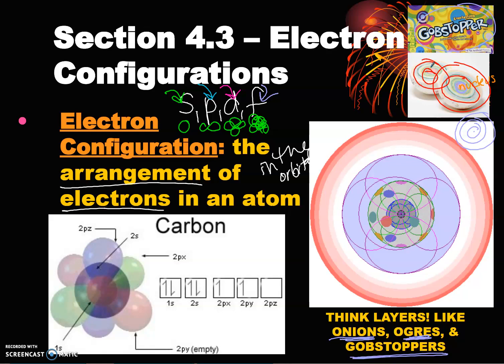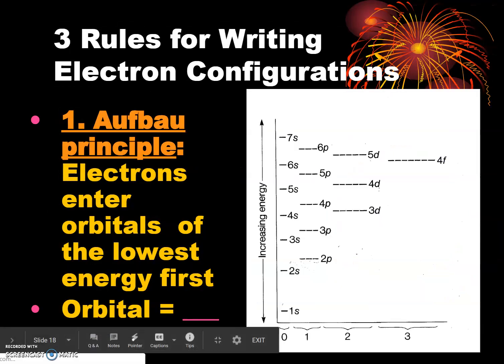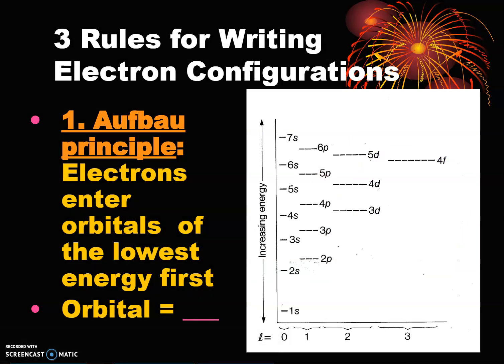In order to go over electron configurations, there are three rules for writing them, and this is where it gets a little tricky. I'm going to go over these three rules and refer back to them constantly, but it won't make full sense until we actually start doing our electron configurations, so please bear with me.